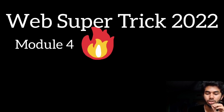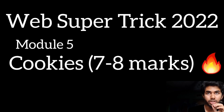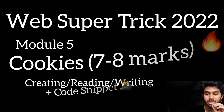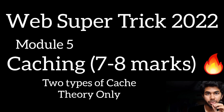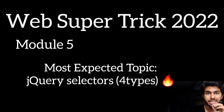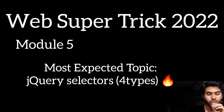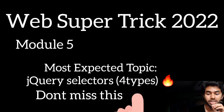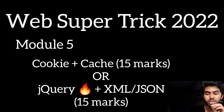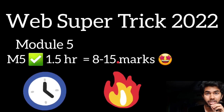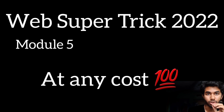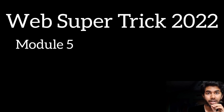For Module 5, cookies are a very important concept — cover creating, reading, and writing cookies. Also know the two types of caching — don't miss that. jQuery selectors, XML, and JSON processing are also very important and frequently repeated. Module 5 takes about 1.5 hours. Either go with cookies and types of caching, or jQuery selectors with XML and JSON. Don't miss jQuery selectors at any cost, as those topics are most frequently repeated.